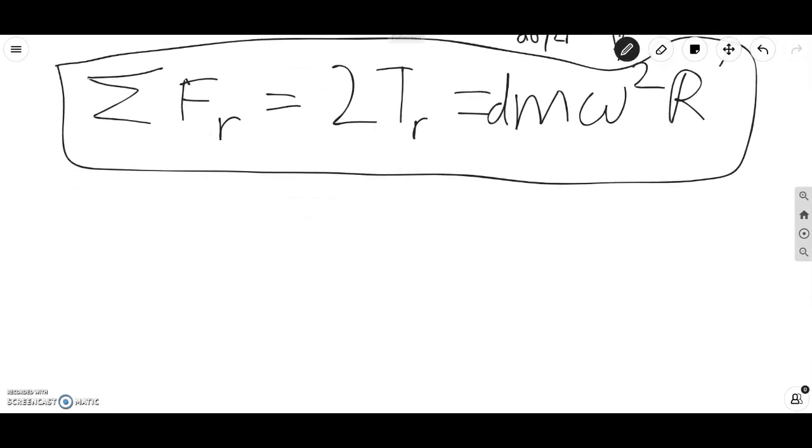So this simply implies that TR is T sine d theta over 2. Now we can rewrite our Newton's laws. If we rewrite this, I'm just going to leave out the sum of the forces, so we have 2T sine d theta over 2 equals dm omega squared R prime.